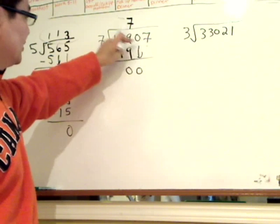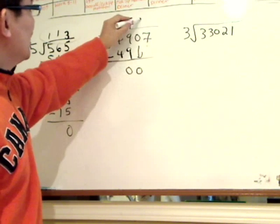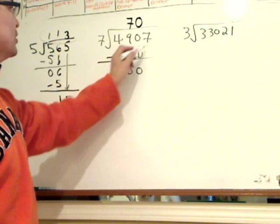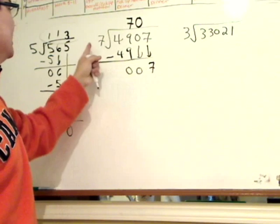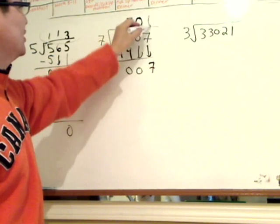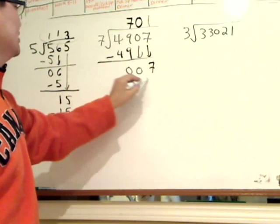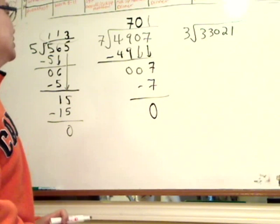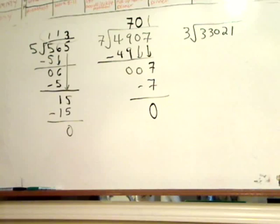You have to put a placeholder of 0 in that number. Then you bring down the 7. 7 go to 7. How many times? Once. Then 1 times 7 is 7. And then subtract, the difference is 0. So the answer is 701.